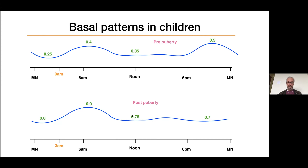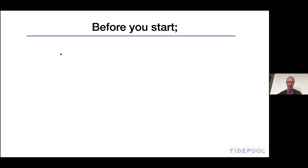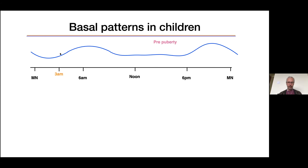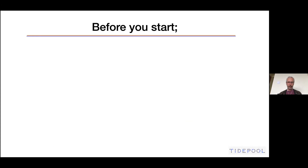If you also remember the pattern based on the age and pubertal status, once you figure out what the nighttime basal should be, you can anticipate what the daytime should look like. If it's a post-pubertal child it'll be roughly the same — 0.7, 0.75. If it's a pre-pubertal six or seven-year-old and the nighttime basal at 3 a.m. is 0.35, then the daytime is also going to approximate 0.3 to 0.35, while the evening will need to be higher — maybe 0.45 to 0.5. You can make those guesses and start from there without asking the patient to do nights without carbs.